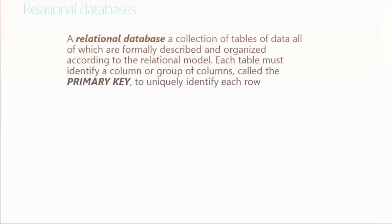Relational databases are a collection of tables. Instead of having everything stored with 80 columns across in a single row, we're going to have fewer columns but multiple tables. The relational piece means we have to have a way for those tables to talk to each other. So we're going to introduce the concept of primary keys, referential integrity, and foreign keys.